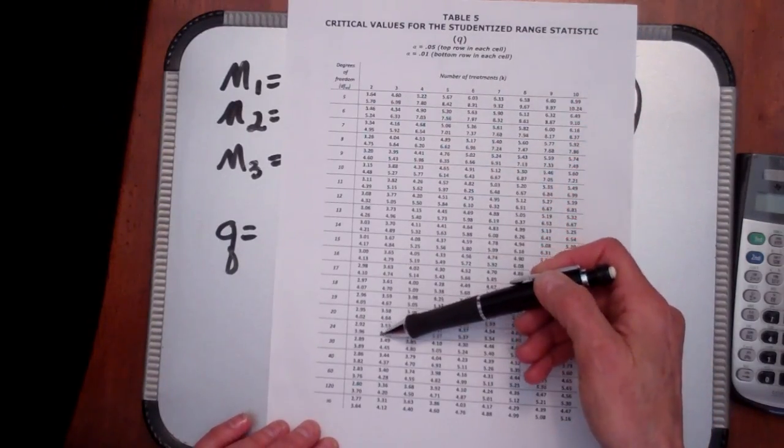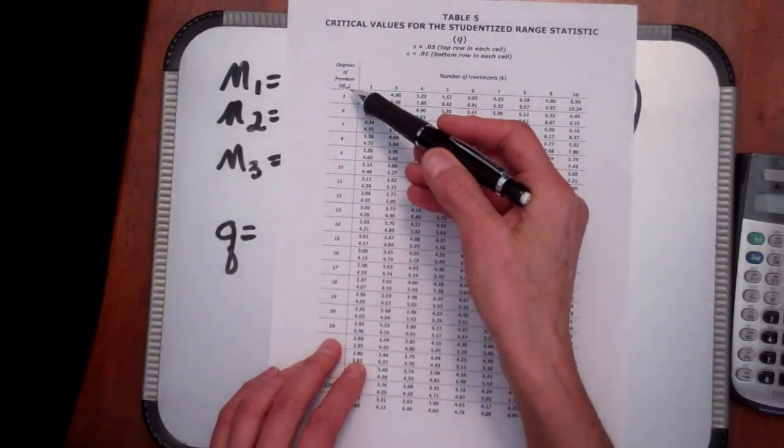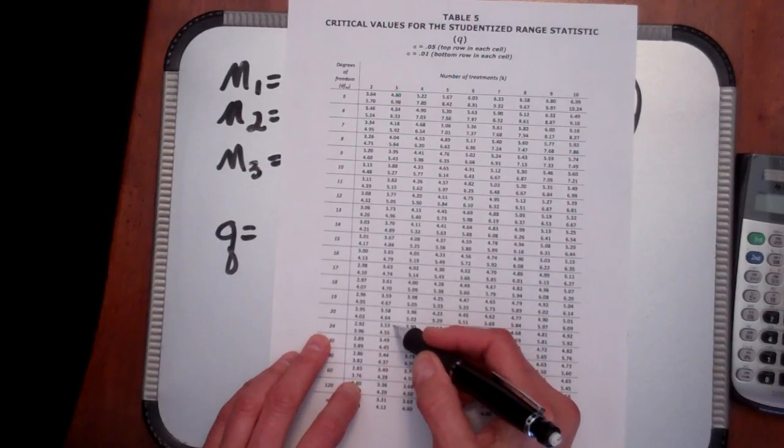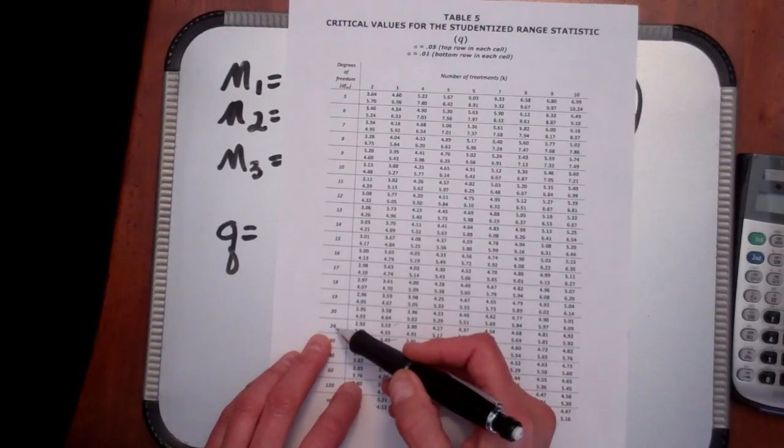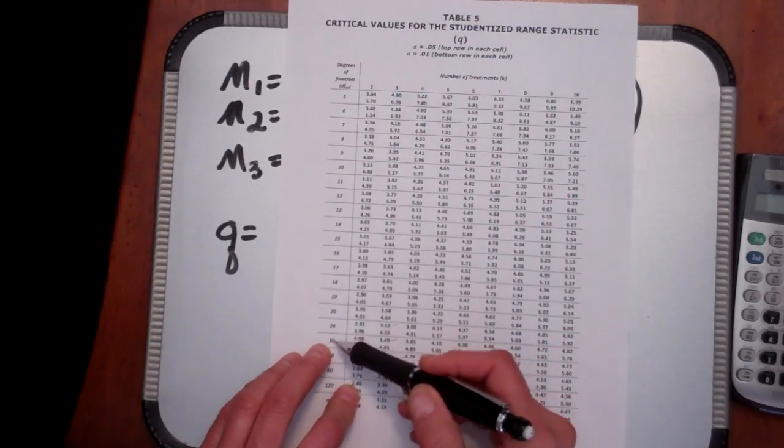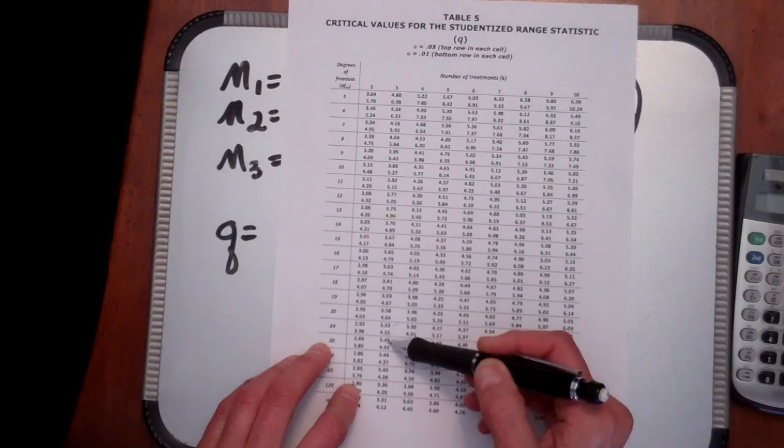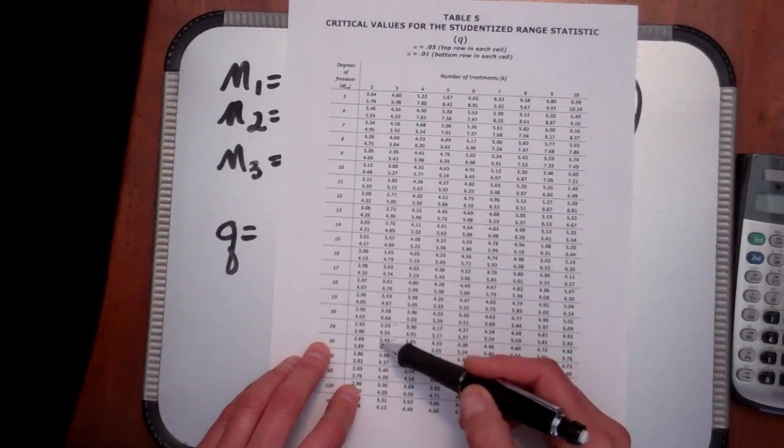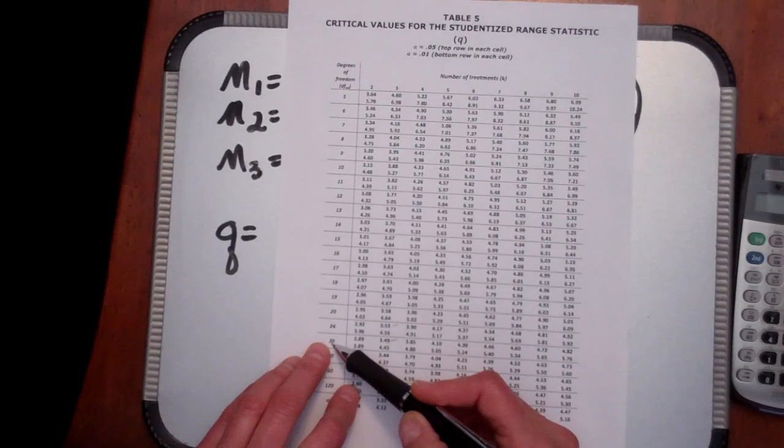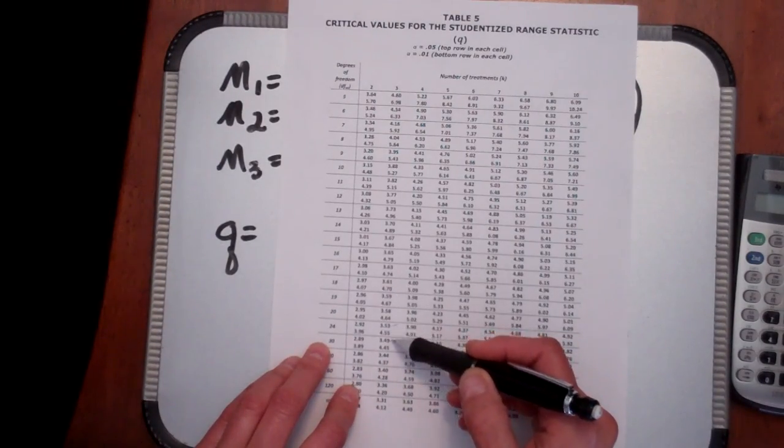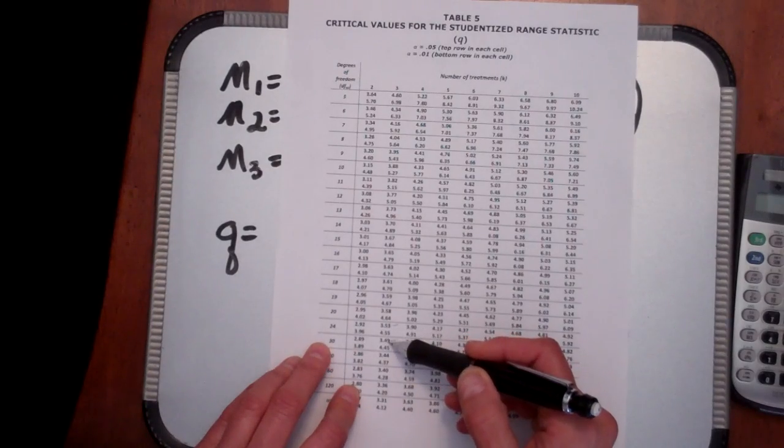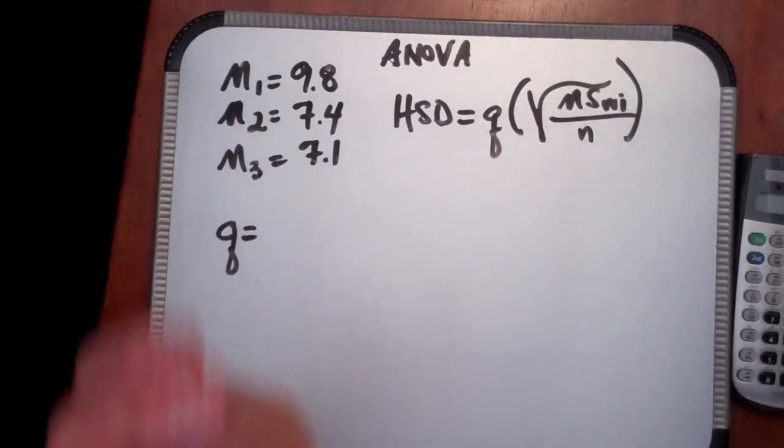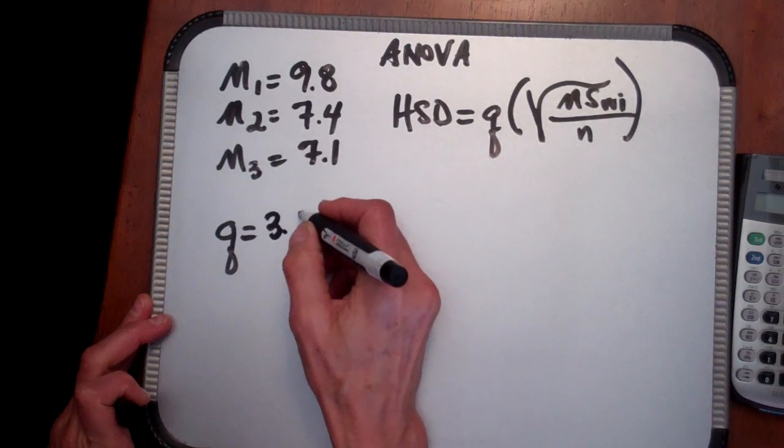And we go down to 27. You remember that our degrees of freedom within for this example that we're working was 27. Now for 0.05 you have values available for degrees of freedom within of 24 and degrees of freedom within of 30. 27 falls between that and so we're going to interpolate a value here. 3.53 would be your value if your degrees of freedom within was 24. 3.49 would be your Q value if your degrees of freedom within was 30. Ours was 27 so we're going to take a Q value of 3.51. We're interpolating a number between 3.53 and 3.49.